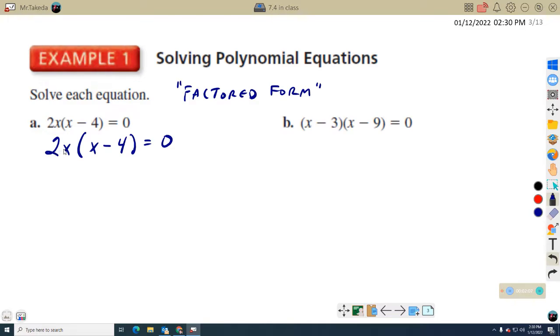So what do I have? I have a two and an X and an X minus four. Essentially, I've got three things being multiplied together here. Well, what is the solution to this equation? Well, I know X has to be zero and X minus four can be zero. X can be zero and X minus four can be zero.